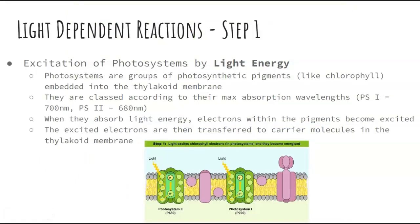Now we'll introduce some new terminology. Step one is the excitation of photosystems by light energy. Photosystems are groups of photosynthetic pigments — for example, chlorophyll. We're going to talk about two big photosystems, classified according to their absorption wavelengths. Photosystem 1 has a max absorption wavelength of 700 nanometers, and photosystem 2 has a max absorption of 680 nanometers. From here on out, I'll refer to them as PS1 and PS2.